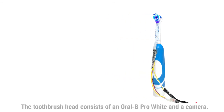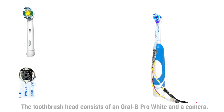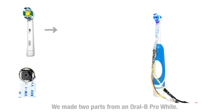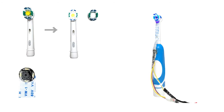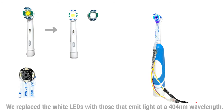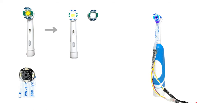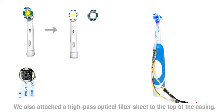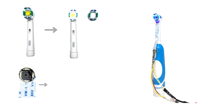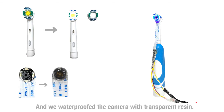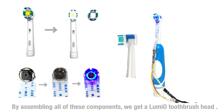The toothbrush head consists of an Oral-B Pro White and a camera. We made two modifications to the Oral-B Pro White: we replaced the white LEDs with those that emit light at a 404 nanometer wavelength, and we attached a high-pass optical filter sheet to the top of the casing. We also waterproofed the camera with transparent resin. By assembling all of these components, we get a Lumio toothbrush head.